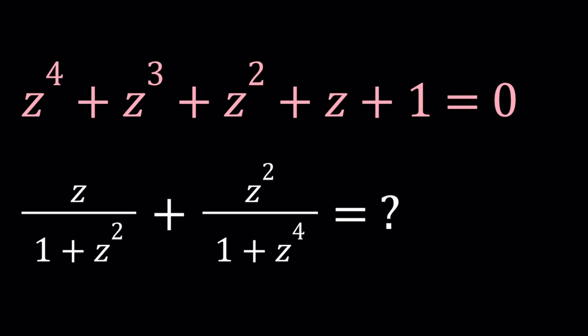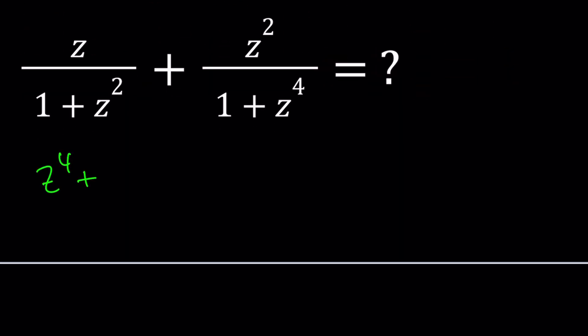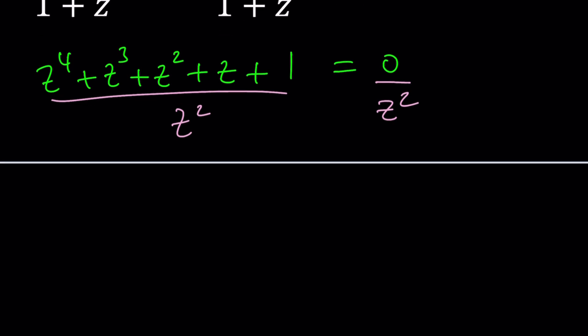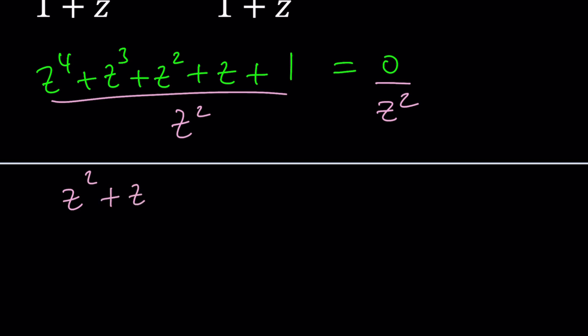First of all, let's start with the given equation. We have a quartic equation which we can solve. Let me show you what you could normally do for an equation like this. Notice the symmetry around the center, which would be z squared in this case. Since z squared is in the middle and we have symmetry, I'm going to divide both sides by z squared.